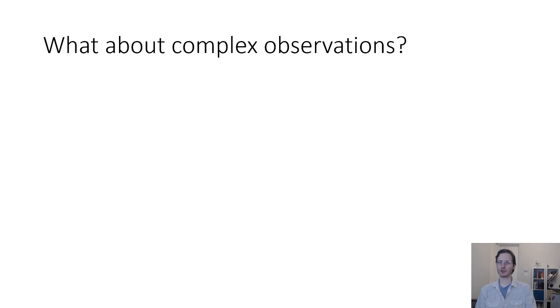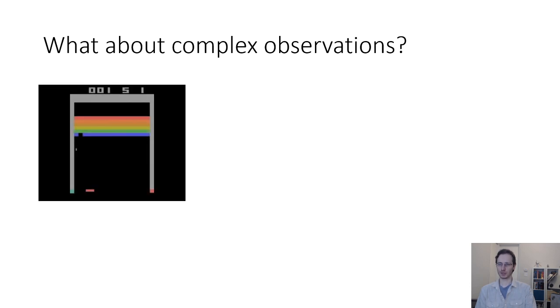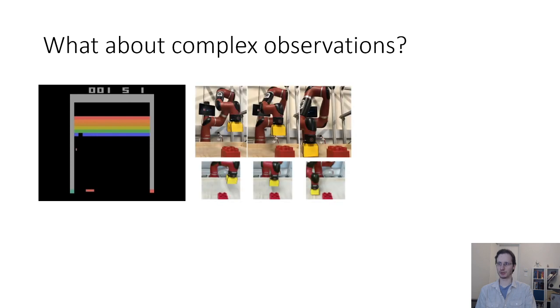So what happens with complex image observations, things like images in Atari or pictures from a robot's camera performing some manipulation task? Well, with the algorithms that we talked about before, they all have some form of model that predicts the next state from the previous state and action and then plans over these states.